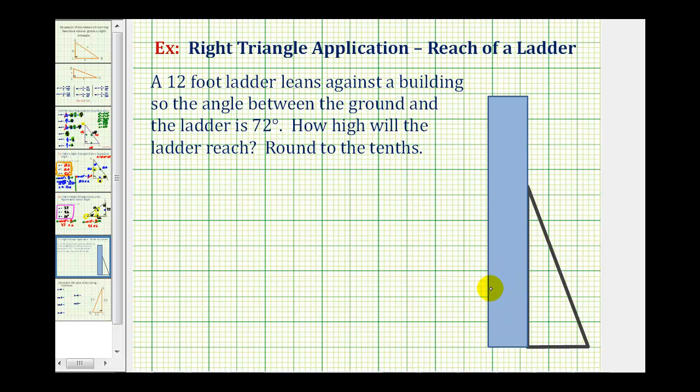So if this blue rectangle is our building, this would be the ladder that has a length of 12 feet. And the ladder forms a 72-degree angle with the ground, which means this angle here is 72 degrees.